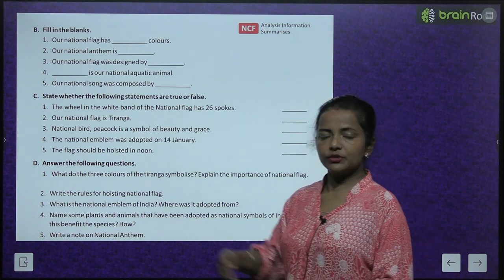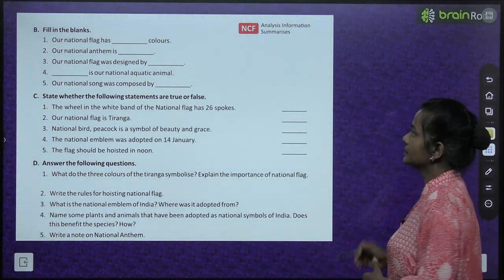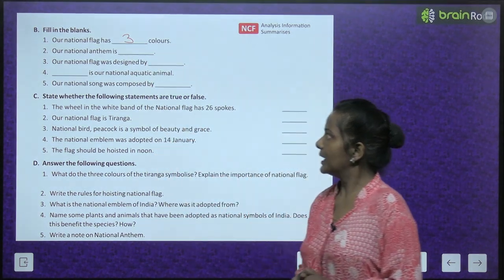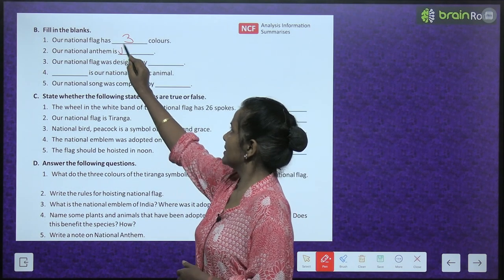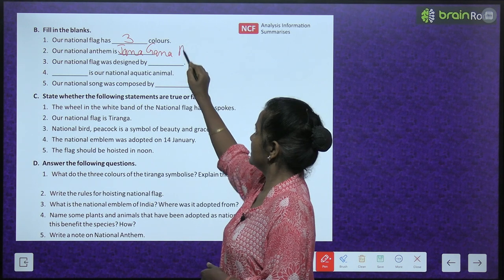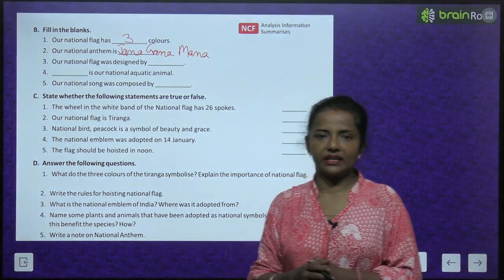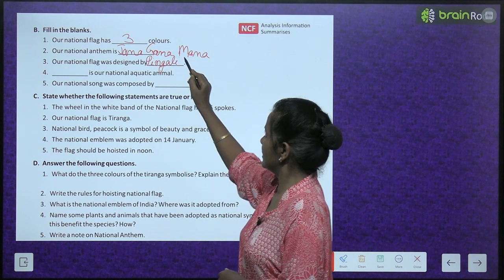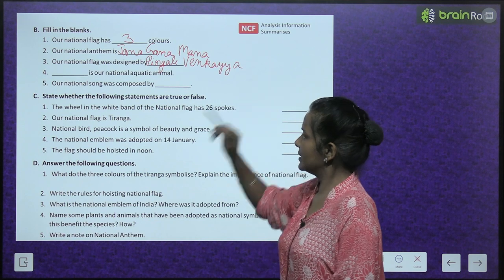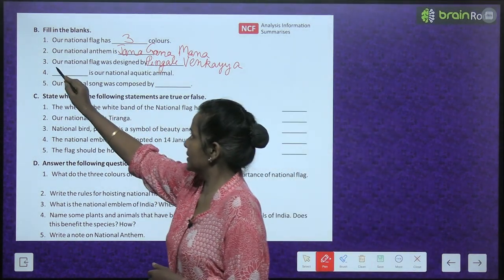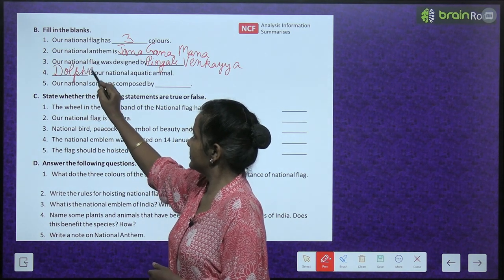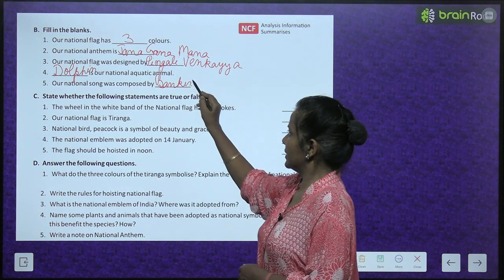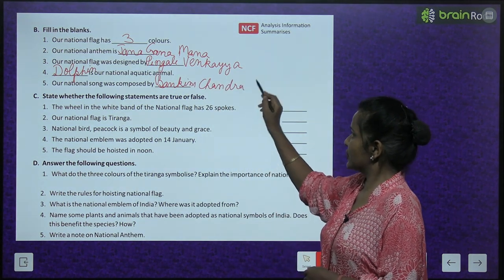Now fill in the blanks. Our national flag has three colours. Our national anthem is Jana Gana Mana. Our national flag was designed by Pingali Venkaya. The Ganges River Dolphin is our national aquatic animal. Our national song, Vande Mataram, was composed by Bankim Chandra Chatterjee.